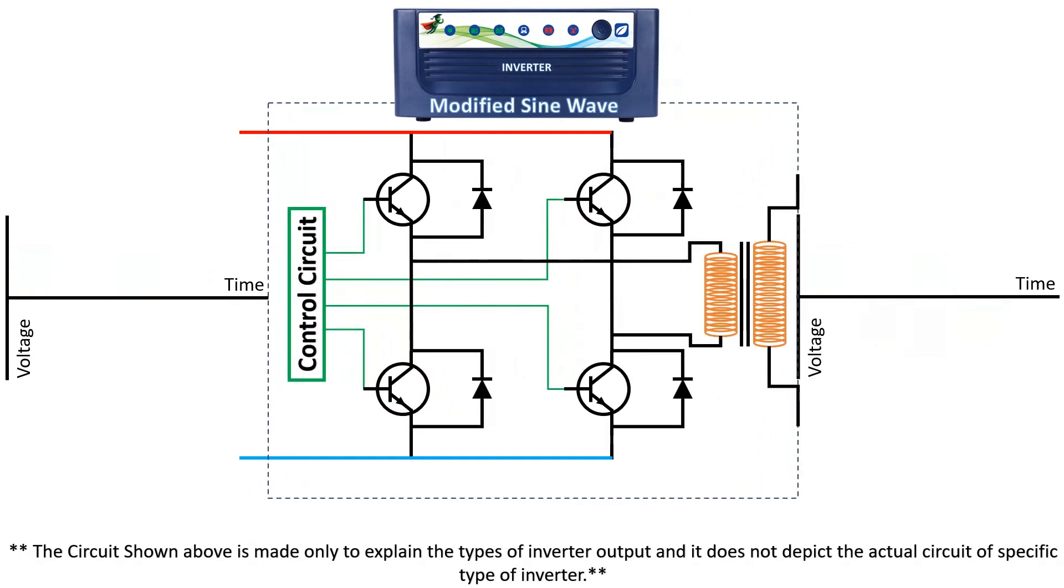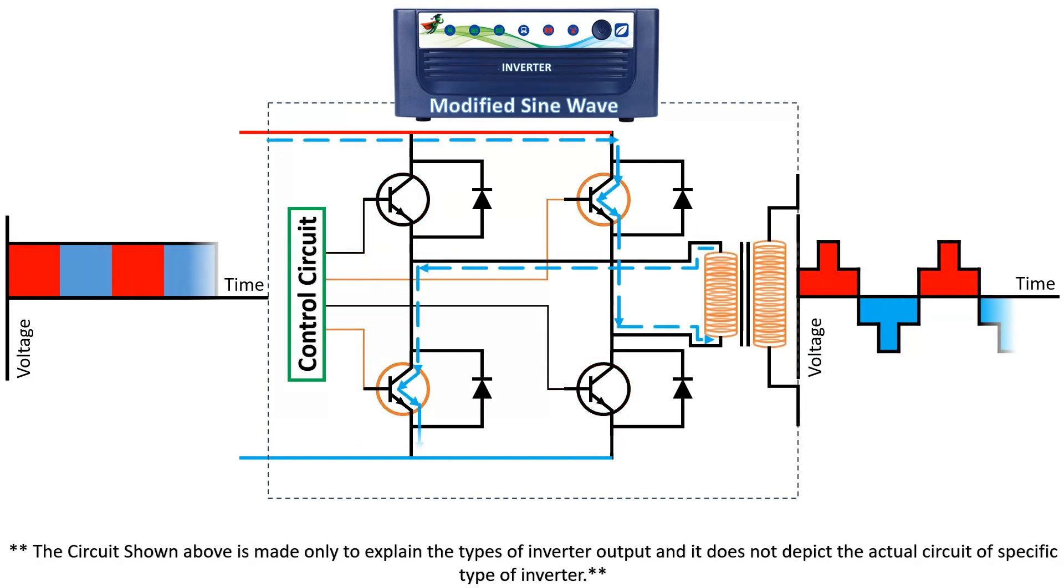Modified sine wave inverters are better than square wave and good for most devices, but they can cause a buzzing sound in some appliances. This might be a better choice for places where general appliances are used more.